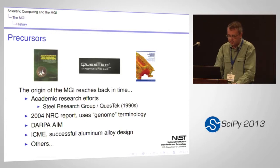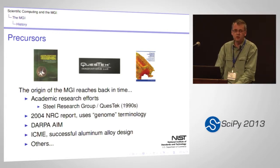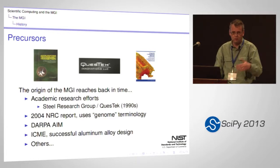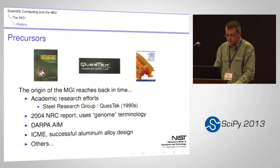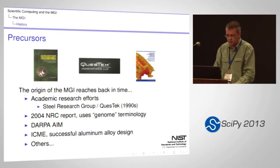The government was also interested in this. There's a 2004 National Academy report on accelerating technology transitions that actually uses the genome terminology — so this may be a good point to talk about the name. I think the reason the word 'genome' is used is to basically call out the kind of data management and project management techniques used in the human genome project. I don't think anybody thinks materials actually have genomes or that you can mutate a material's genome to get a better material. But the human genome project was very well run and very successful, so if that's where the name comes from, that's good news.